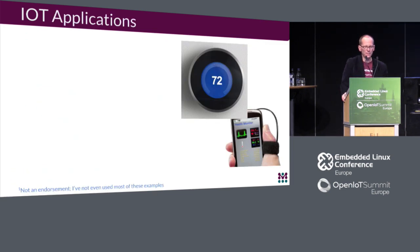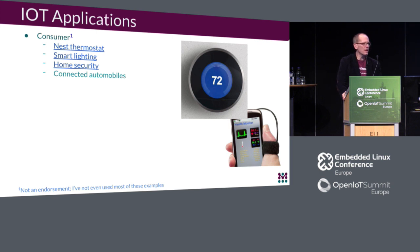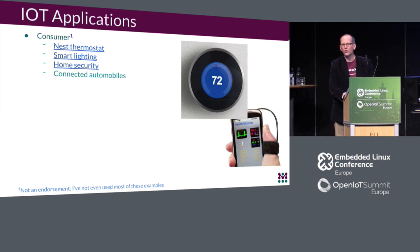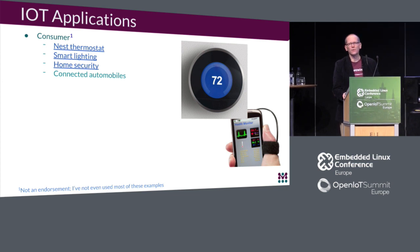Typical IoT applications — first ones that come to mind are consumer devices: the Nest thermostat and competitors for smart home climate control, smart lighting, home security like the Ring doorbell, and connected automobiles. Automobiles are getting more and more connected every day. A modern high-end automobile has about ten times the number of lines of code as a 747 jet, so there's a lot of code and connectivity going on.